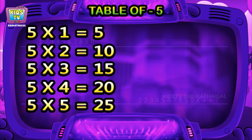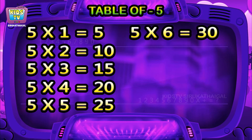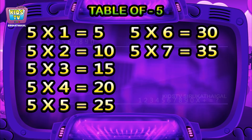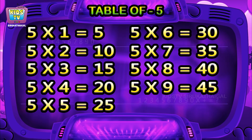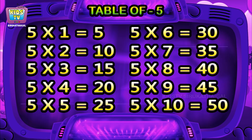Five fives are twenty-five, five sixes are thirty, five sevens are thirty-five, five eights are forty, five nines are forty-five, five tens are fifty.